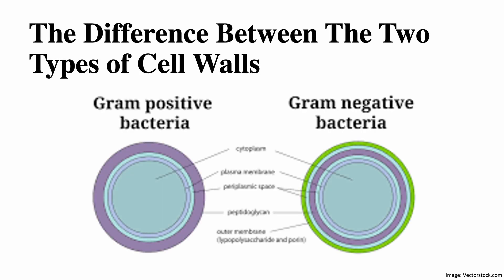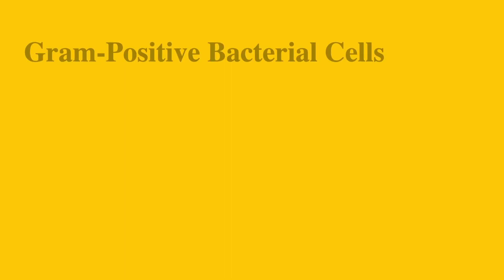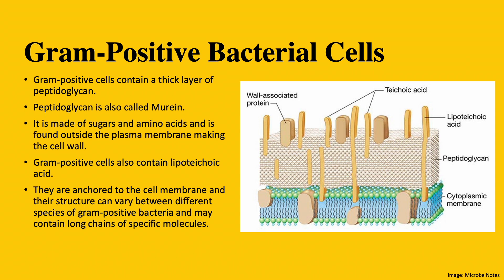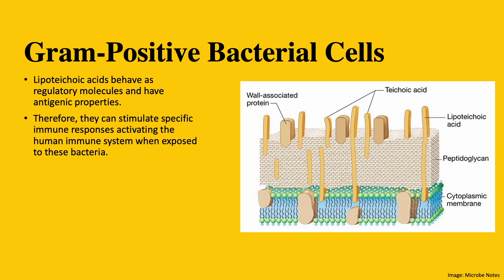The difference between the two types of cell walls. Gram-positive bacterial cells contain a thick layer of peptidoglycan, also called murein. It is made of sugars and amino acids and is found outside the plasma membrane, which is where the cell wall lies. Gram-positive cells also contain lipoteichoic acid. These are anchored in the cell membrane, their structure can vary between different gram-positive bacteria, and they behave as regulatory molecules with antigenic properties. Therefore, they can stimulate specific immune responses, activating the human immune system when exposed.